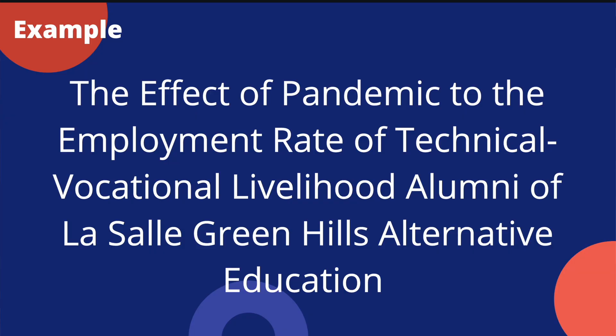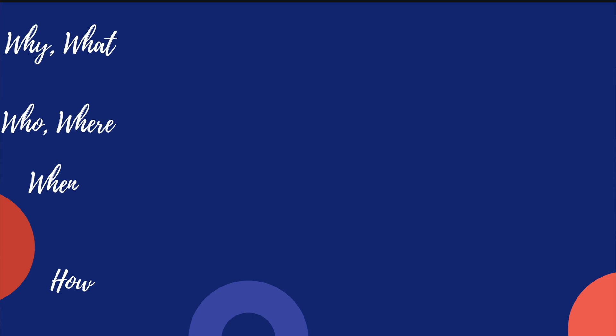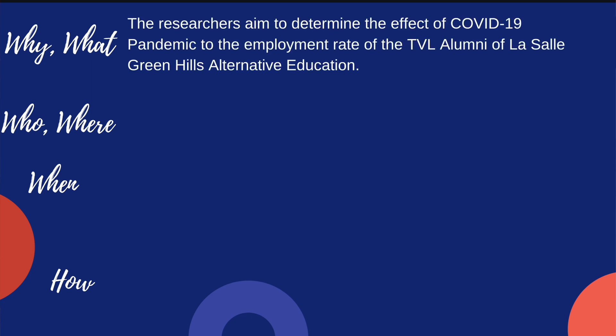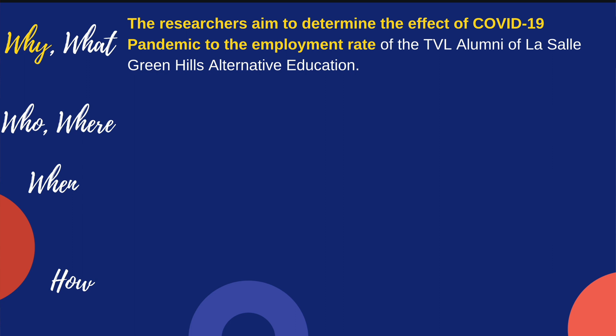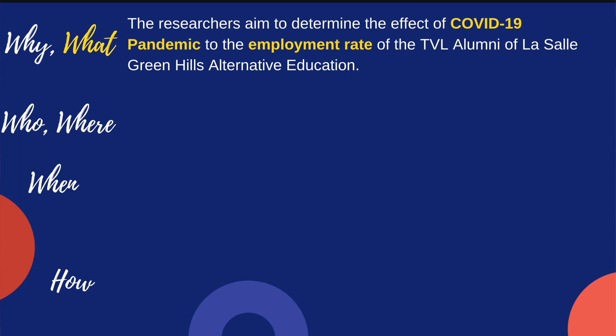So using this topic, I will show you how to write a complete scope and delimitation. All you have to remember are the WH and H questions. For WHY and WHAT, you can write: 'The researchers aim to determine the effect of the COVID-19 pandemic on the employment rate of the TVL alumni of LaSalle Green Hills Alternative Education.' This states the purpose (WHY) and mentions the variables — COVID-19 pandemic and employment rate of TVL alumni (WHAT).